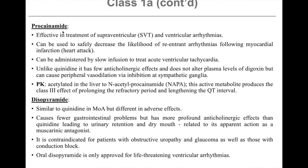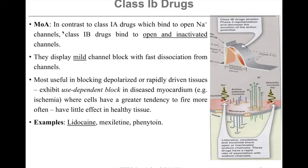Disopyramide is similar to quinidine in its mechanism of action but different in its adverse effects. It causes fewer gastrointestinal problems but has more profound anticholinergic effects than quinidine, leading to urinary retention and dry mouth related to its action as a muscarinic antagonist. It is therefore contraindicated for patients with obstructive uropathy, glaucoma, and those with conduction block. Oral disopyramide is approved only for life-threatening ventricular arrhythmias.